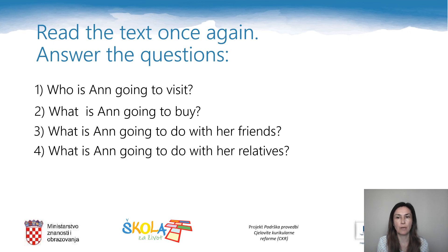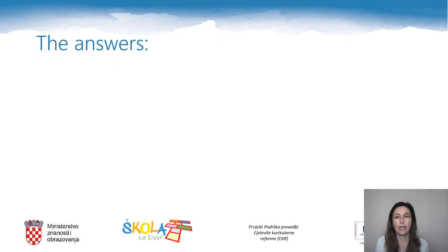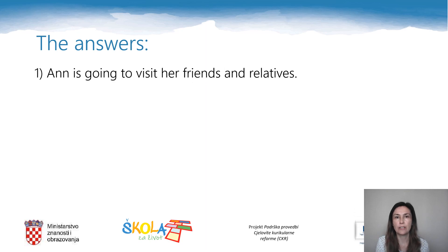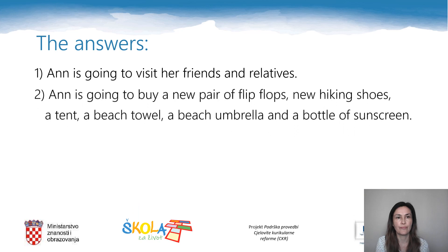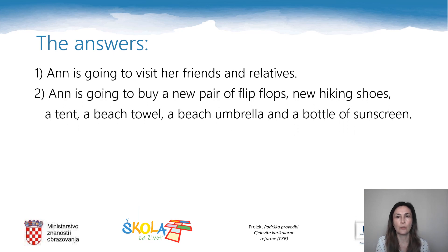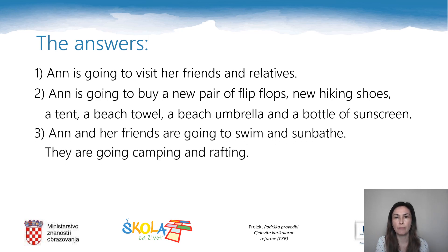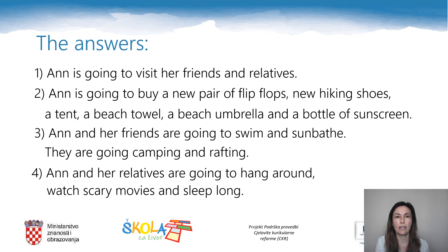Now pause the video, rewind it and read the text once again. After this reading, answer the following questions: Who is Anne going to visit? What is Anne going to buy? What is Anne going to do with her friends? What is Anne going to do with her relatives? Anne is going to buy a new pair of flip-flops, new hiking shoes, a tent, a beach towel, a beach umbrella and a bottle of sunscreen. Anne and her friends are going to swim and sunbathe, and they are going camping and rafting. Anne and her relatives are going to hang around, watch scary movies and sleep long.